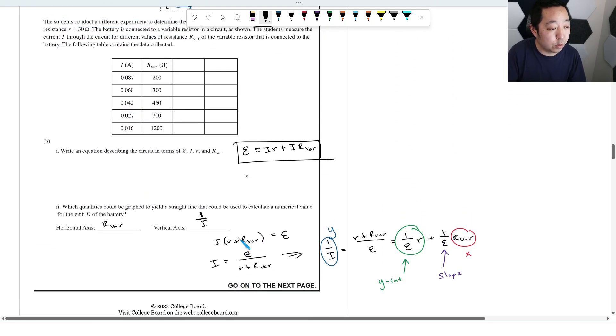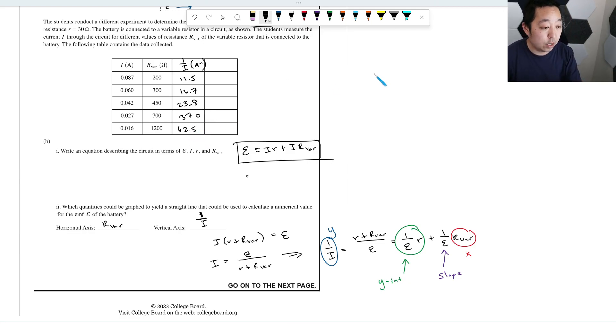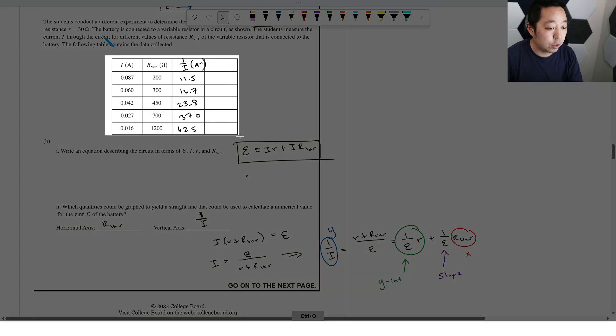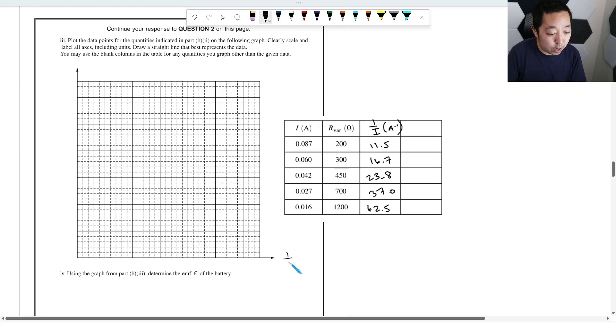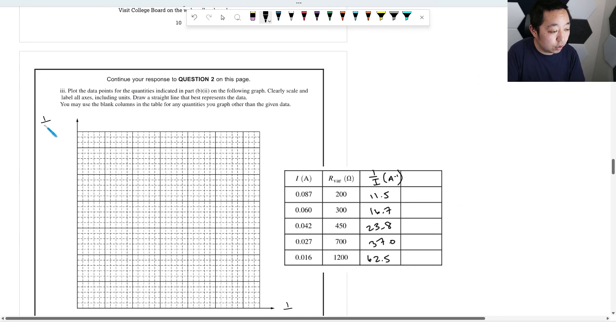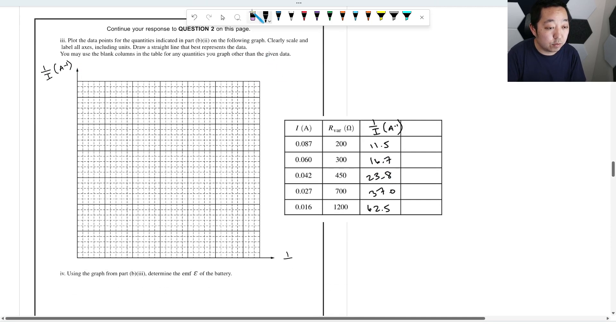So we're going to plot this data. I want to compute what one over I is. So one divided by 0.087 is 11.5, one divided by 0.06 is 16.7, one divided by 0.042 is 23.8, one divided by 0.027 is 37.0, and then one divided by 0.016 is 62.5. So that's going to be my table of values. In the interest of saving us a little bit of time, I'm just going to copy that down to here so we can record it more easily. So those are my values. Now my y-axis, I said was one over I, and then put the units as A to the negative one or one over amps. And then the x value is going to be R_var, which is in ohms.